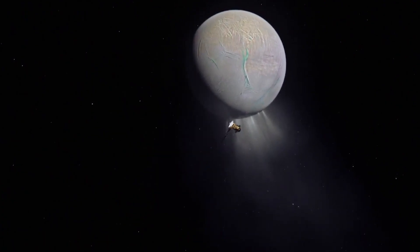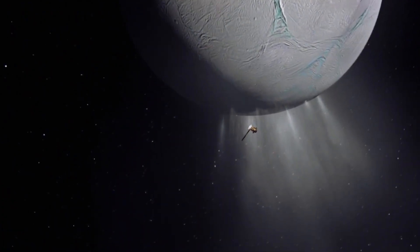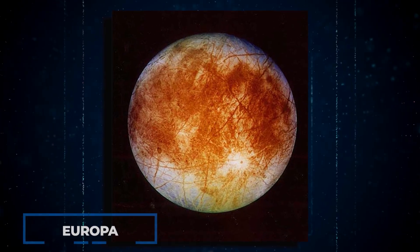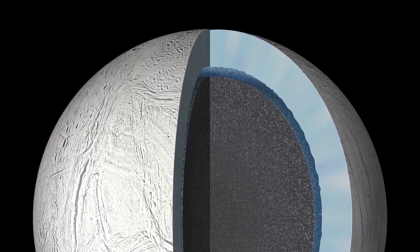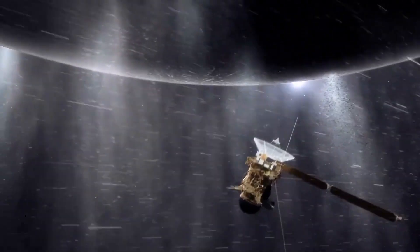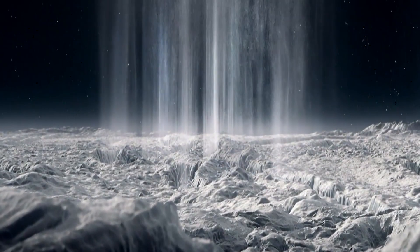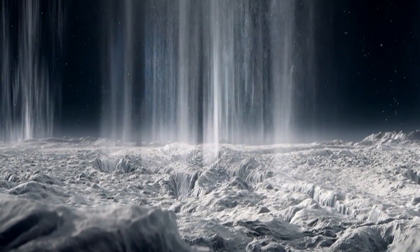Voyager provided the first indications that Enceladus, similar to Jupiter's moon Europa, could potentially harbour liquid water beneath its surface. It was not until the Cassini mission, decades later, that scientists confirmed the presence of a vast subsurface ocean enveloping this small world.